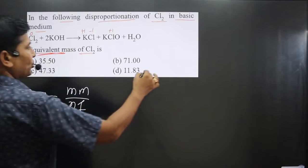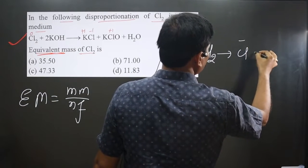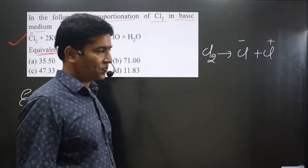We have Cl2, and then we have Cl- and then we have Cl+. This is what we have the equation.